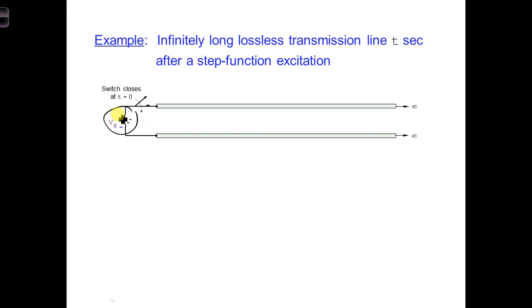Spend a minute drawing what the voltage looks like along the transmission line after t seconds. Include the amplitude of the wave and also label how far the wave has propagated after t seconds. Assume the conductors are perfectly conducting and there is air between and around the two conductors. This is an infinitely long transmission line.